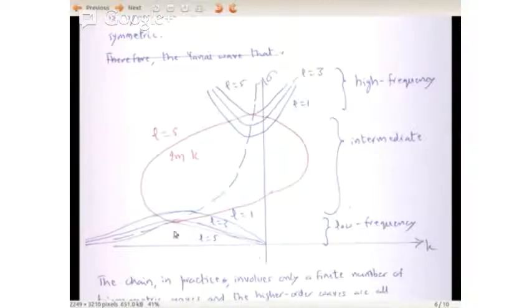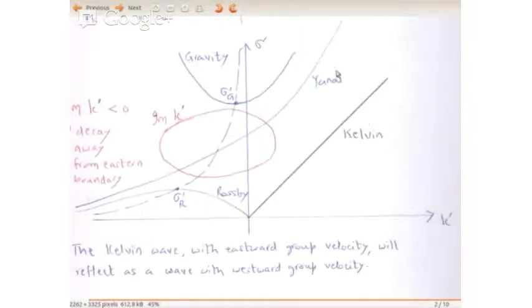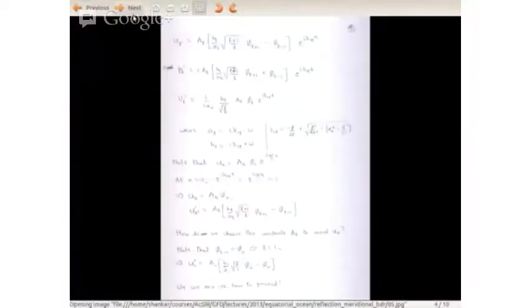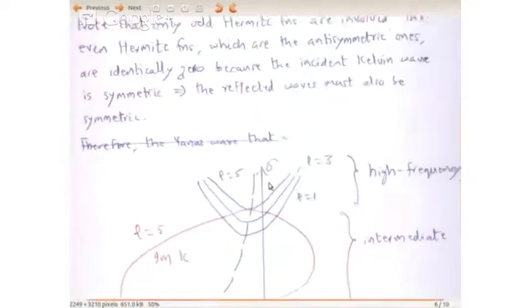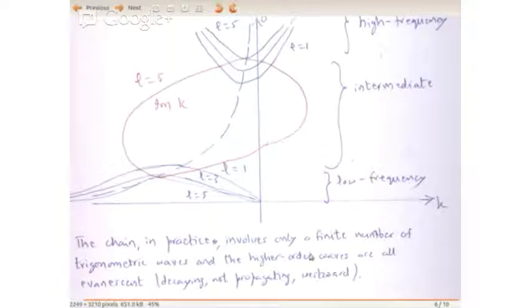The l equals 1, 3, 5 Rossby modes are excited. If you have a high frequency Kelvin wave, you will need gravity waves and those imaginary wavenumbers — the decaying waves. At low frequencies you get low-frequency Kelvin waves, Rossby waves, and evanescent waves. In practice the chain will involve only a finite number of propagating waves, and higher-order waves will all be evanescent — decaying, not propagating westward, but decaying westward away from the eastern boundary.